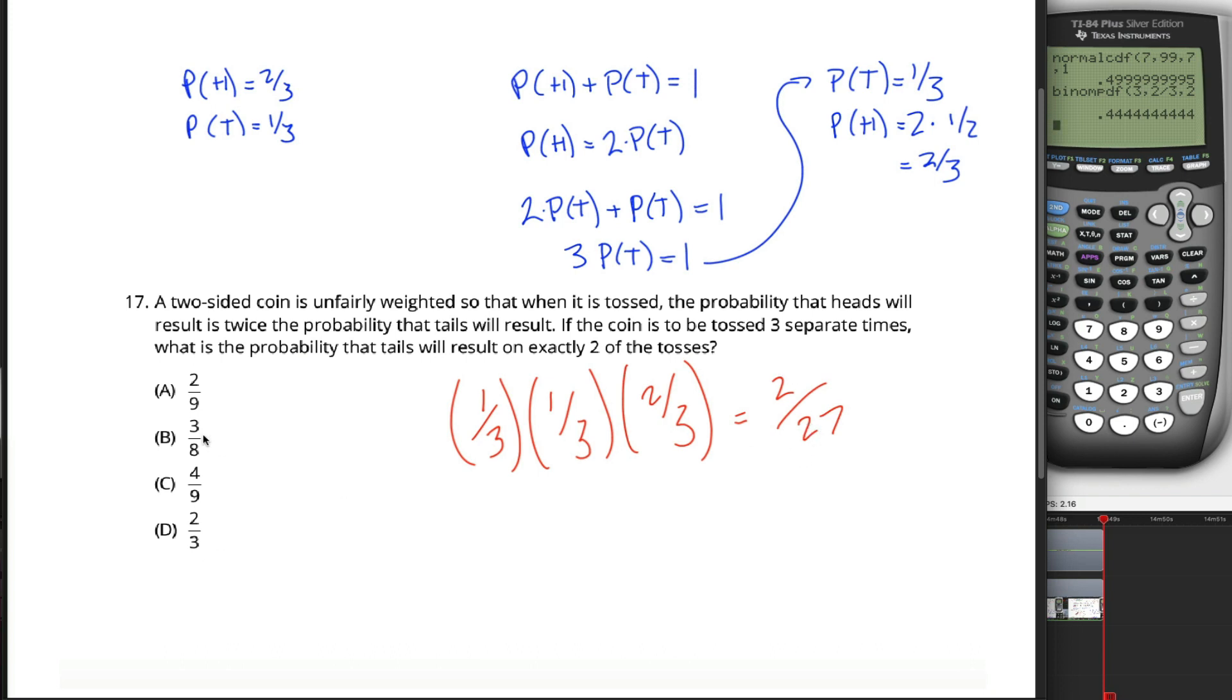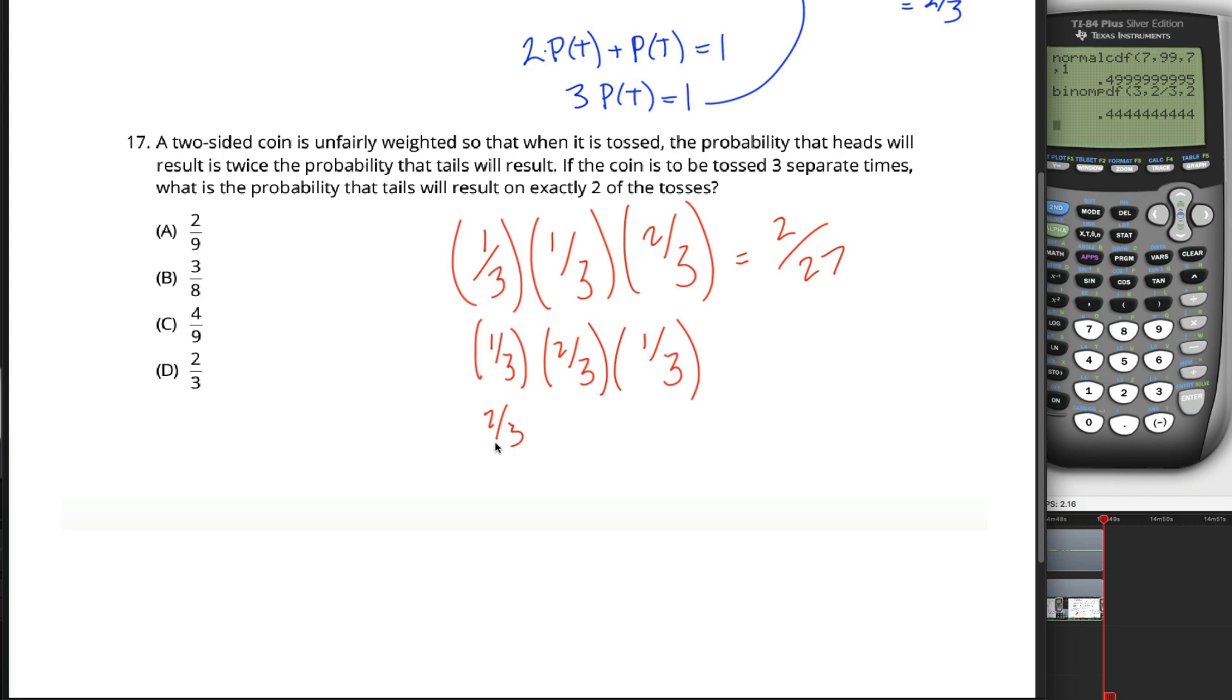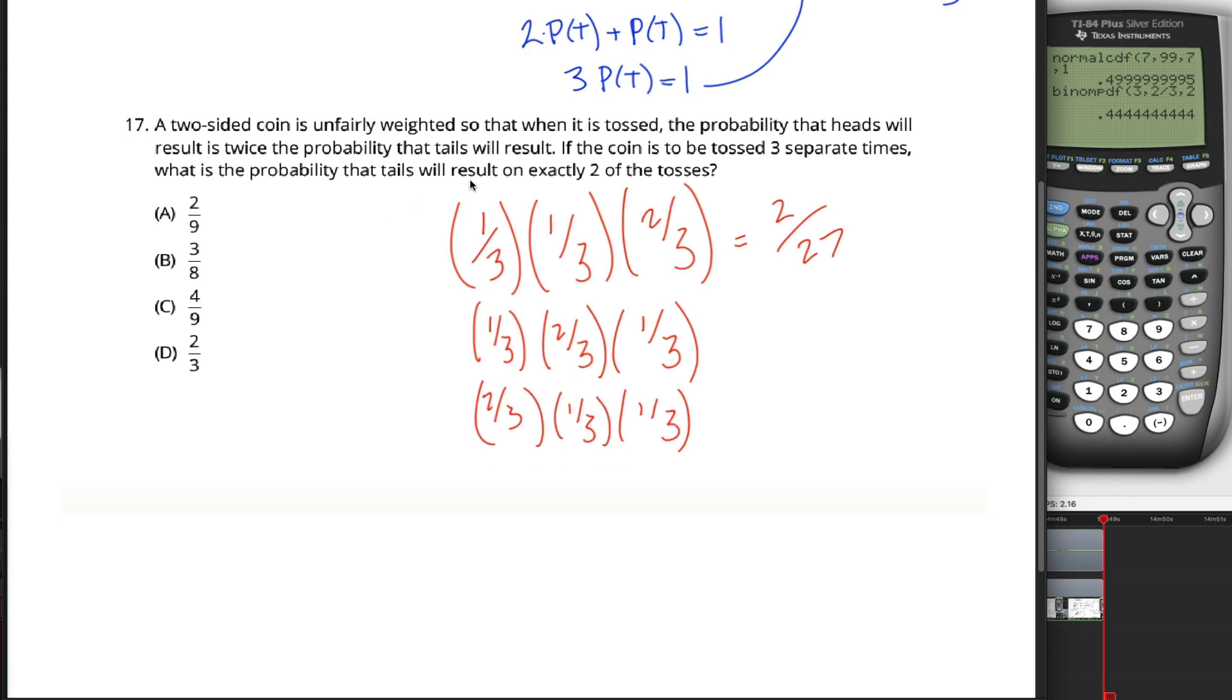But that's not the right answer. I'm surprised they didn't make that one of the answers. This is the probability of getting tails, then tails, then heads. But we don't need to get them in that order. We get tails, and then heads, and then tails, for example. Or we could get heads, and then tails, and then tails. The probability of exactly two tails is kind of this amount, plus this amount, plus this amount.